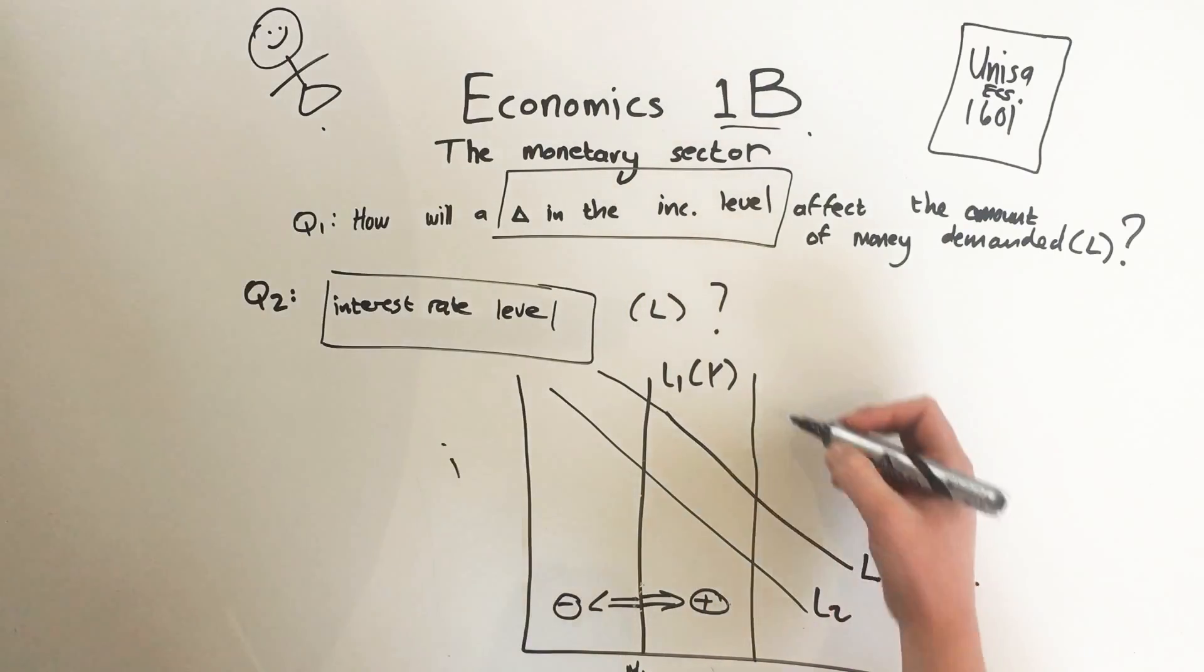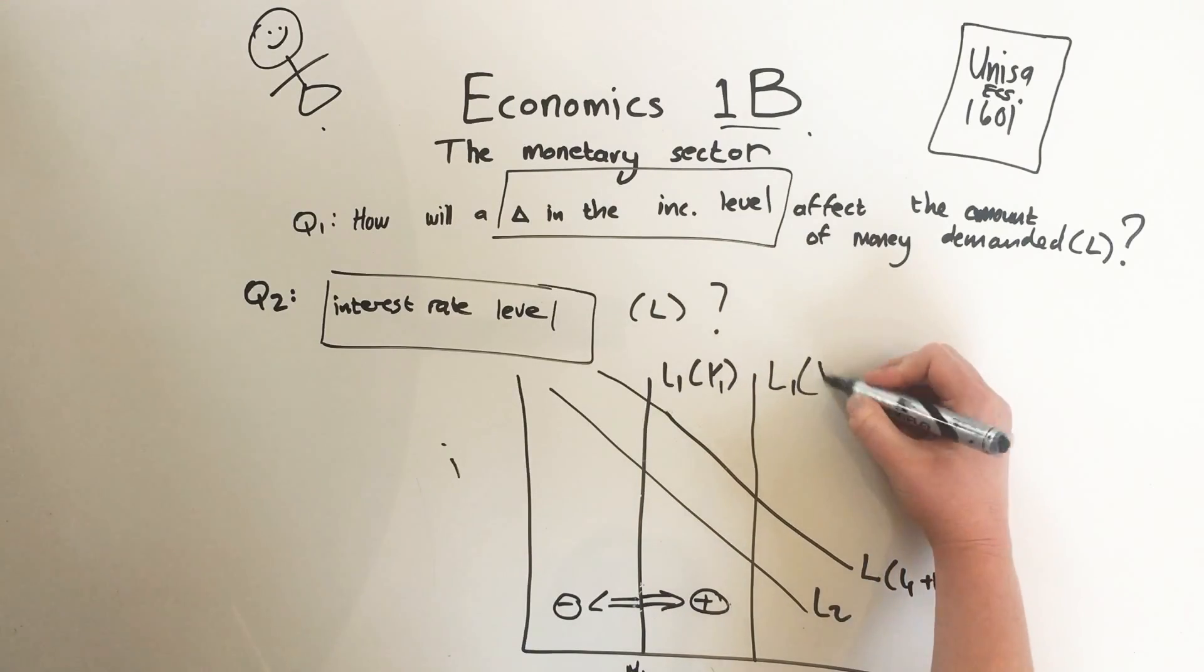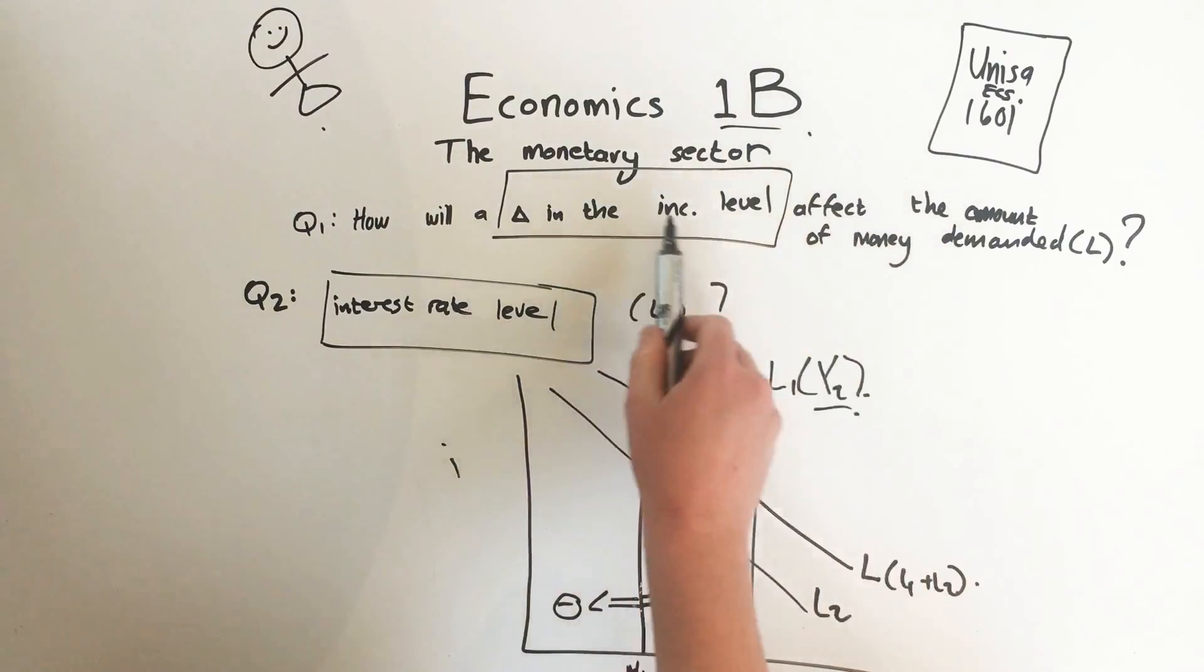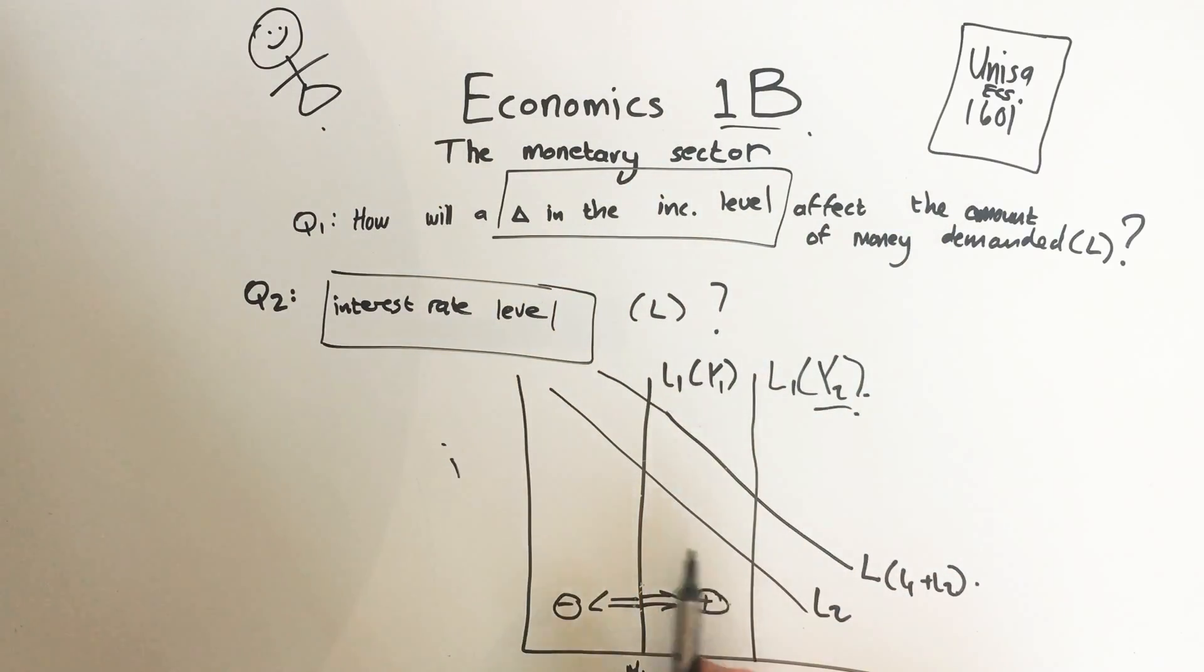Let me just double-check myself. Yes, this one moves there. And here we have L1 for Y2 - Y2 is where the income level increased. If that one moves out, then that one will move out. So our original point would have been here, and now our total point - this one will move out, so that will be our new point, which means more money will be demanded.